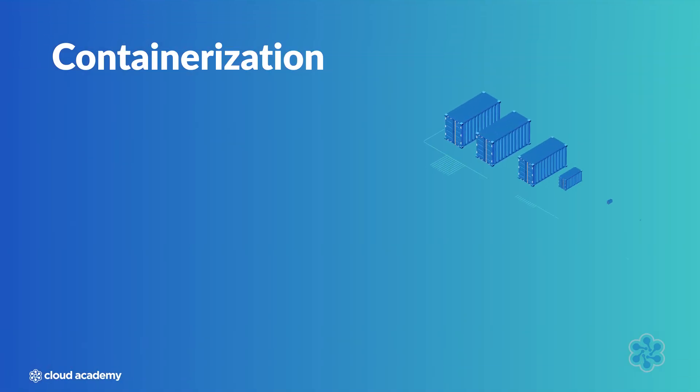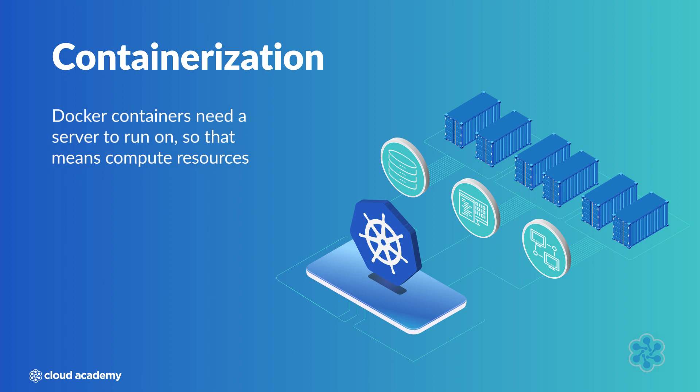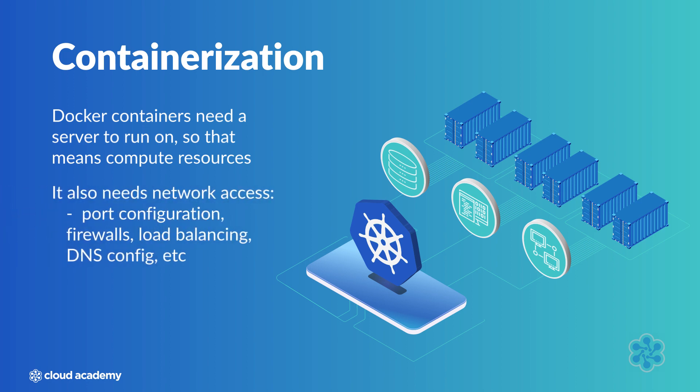Consider the basic resources needed to deploy a Dockerized application. The Docker container needs a server to run on — compute resources — a certain amount of CPU and memory. It also means network access, port configuration, firewalls, load balancing, and DNS configs. The app may need to talk to other backend services, or it may be part of a larger system of microservices involving several other Docker apps. Managing all of this complexity manually is very difficult. We'd need to create all sorts of scripts and documentation for each server, each network setup, each application's hardware needs, config files, et cetera.